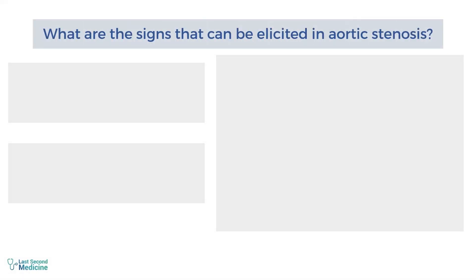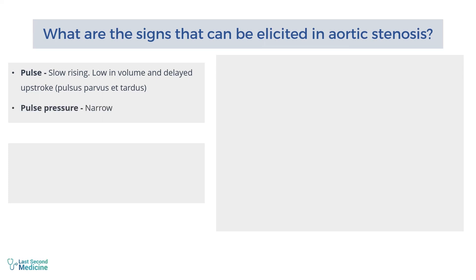What are the signs that can be elicited in aortic stenosis? The pulse is usually slow rising. The carotid pulse will be low in volume and its upstroke will be delayed — this is known as pulsus parvus et tardus. Pulse pressure will be narrow. The apex beat will be heaving and undisplaced. A thrill may be palpable in the aortic area.